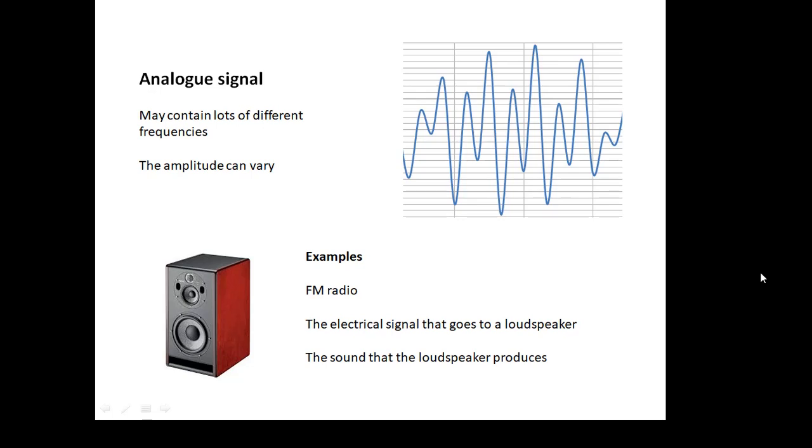An analog signal - if you looked at it with an oscilloscope, you'd see something like this. It might contain lots of different frequencies. The amplitude can vary quite a bit. For example, FM radio. The electrical signal that goes to a loudspeaker is an analog signal, and the sound that the speaker produces is an analog signal. Lots of different frequencies, amplitude all over the place.